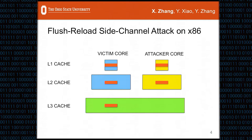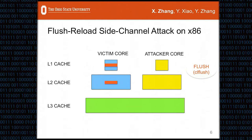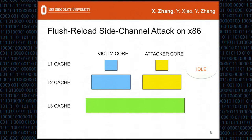Let's see how Flush+Reload works on Intel x86. We have three levels of caches, and the victim and attacker are running on different cores. In the beginning, they may have the same cache line loaded in their respective caches. The attacker executes the flush instruction, which is CLFLUSH on Intel x86, flushing the cache line out of the entire cache hierarchy. Since the last-level cache is inclusive, the same cache line in the victim's core will also be flushed. After the flush, the attacker stays idle, and during this idle period the victim may visit the same cache line, filling it into its L1, L2, and L3 cache.